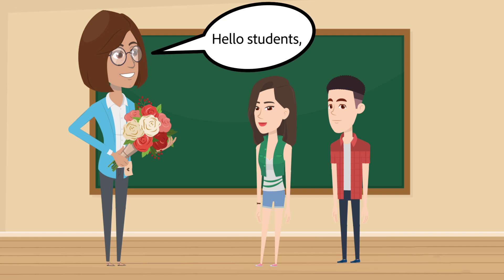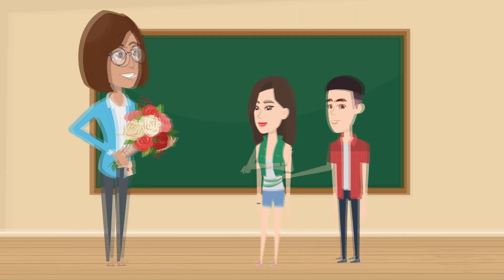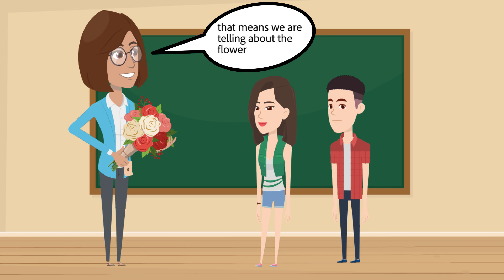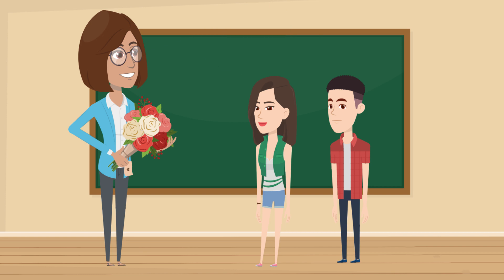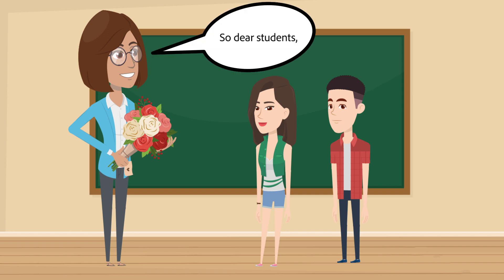Hello, students. Can someone tell me how does the flower look? It is beautiful, madam. Yes. That means we are telling about the flower through the word 'beautiful.' This word describes the quality or the nature of the flower. So, dear students, these words are called describing words.